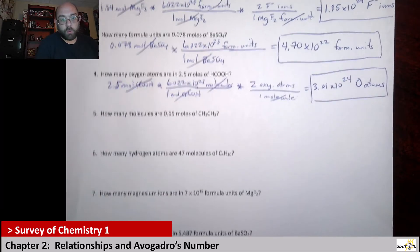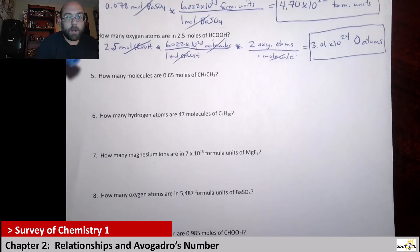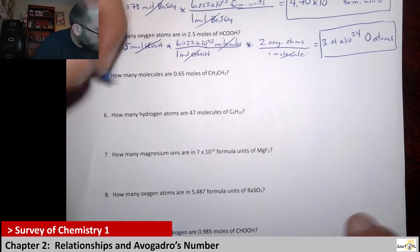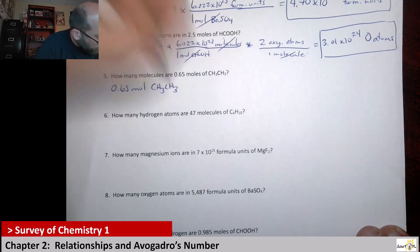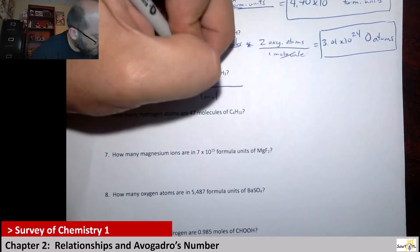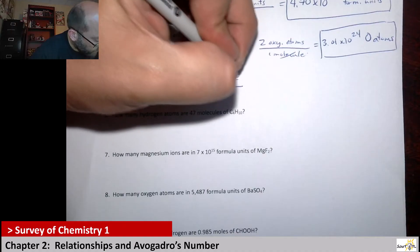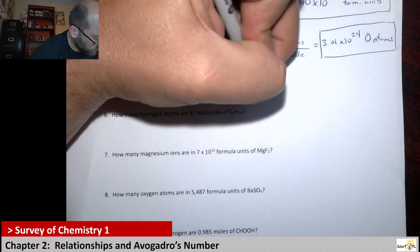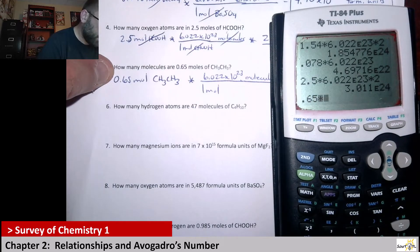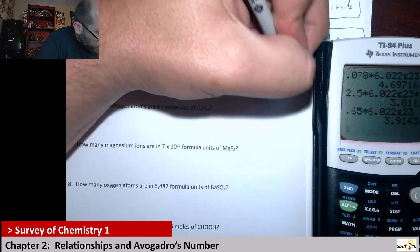Number 5: how many molecules are in 0.65 moles of CH3CH3? So if we have 0.65 moles of CH3CH3, we can just use Avogadro's number for that — one mole would have Avogadro's number in molecules. So I'm just saying 0.65 times 6.022 times 10 to the 23, and that gives me 3.91 times 10 to the 23.